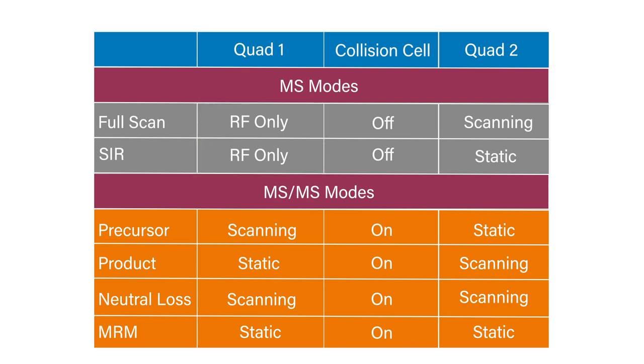When in this mode, the quadrupole will allow all ions to pass through without affecting them. The other characteristic of an MS experiment is that the collision cell is set to also pass all ions through without fragmentation.